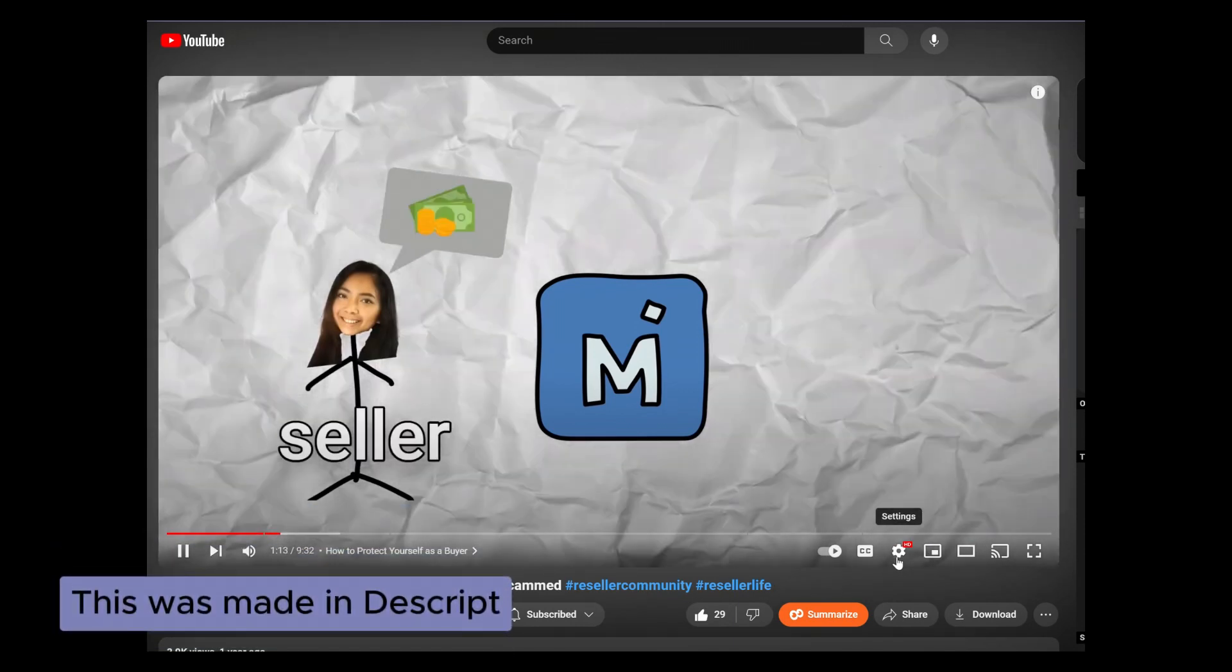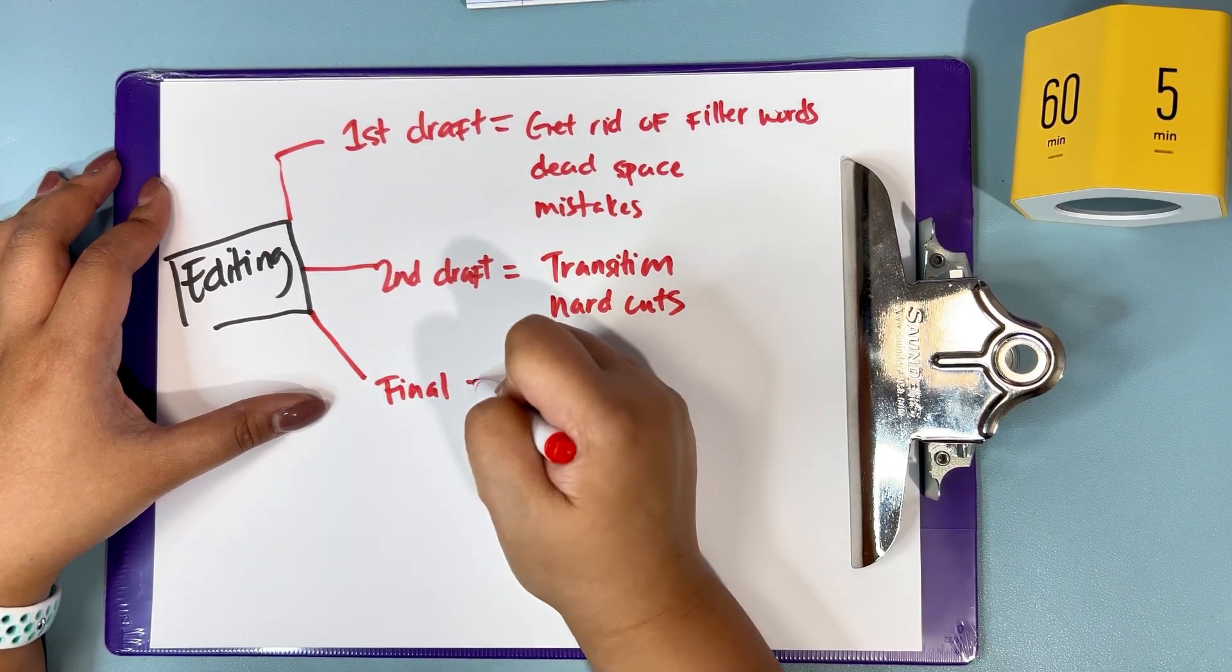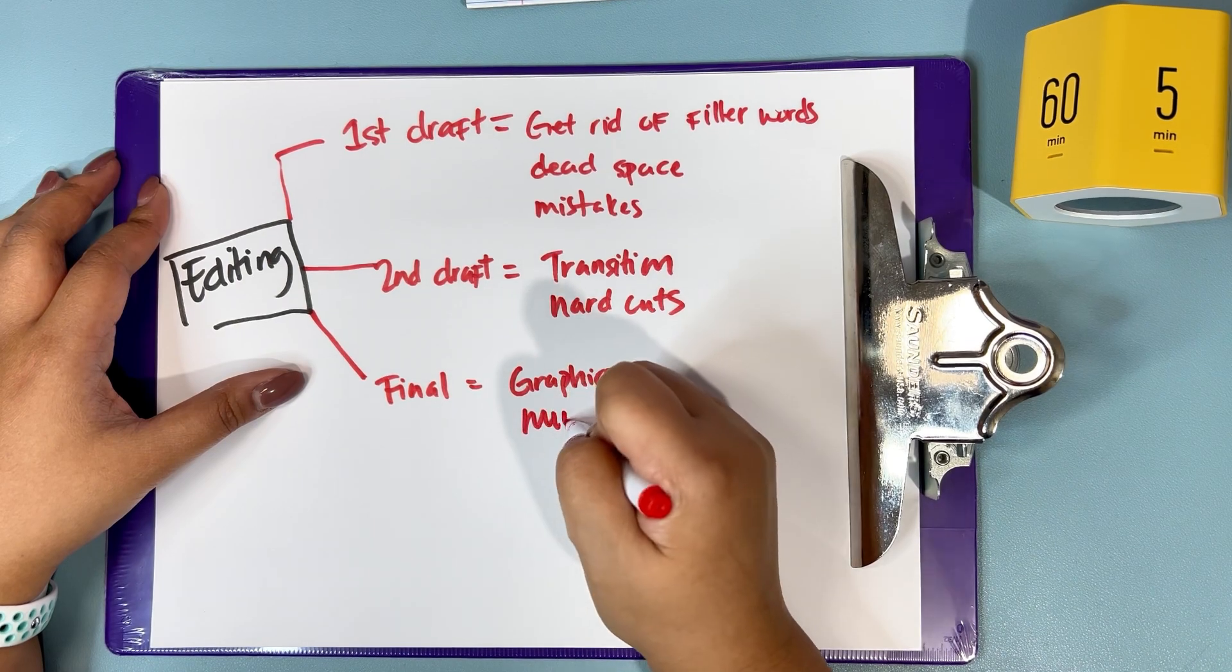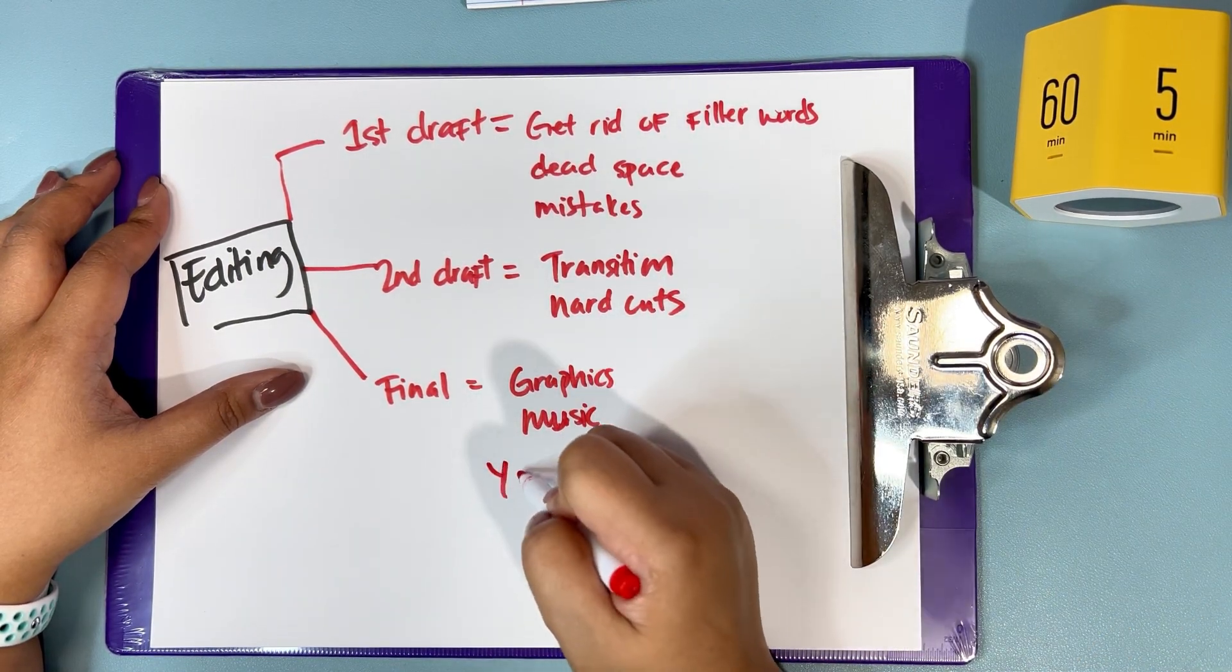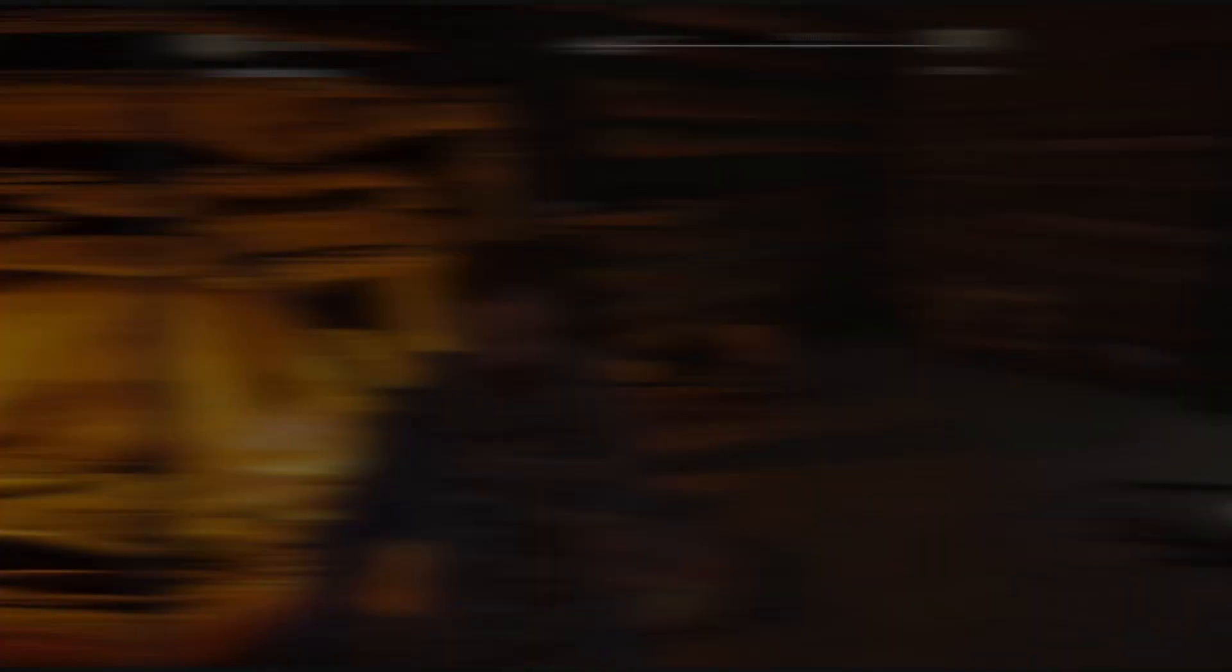Descript is also great for adding graphics, music, and YouTube end cards. Graphics can be pop-ups or like B-roll footage while music includes sound effects or background tunes. YouTube end cards are exactly what they sound like. Let me post it here somewhere in this video.